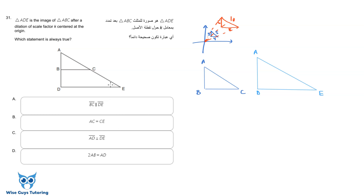Since all angles are the same, let's see which statement must be true. Angle E must equal angle C, angle D must equal angle B, and angle A is obviously the same for both triangles because it's at the same corner. So all three pairs of angles are equal.